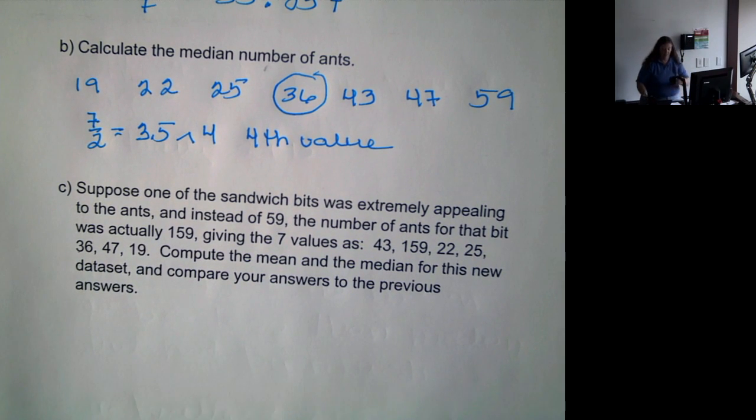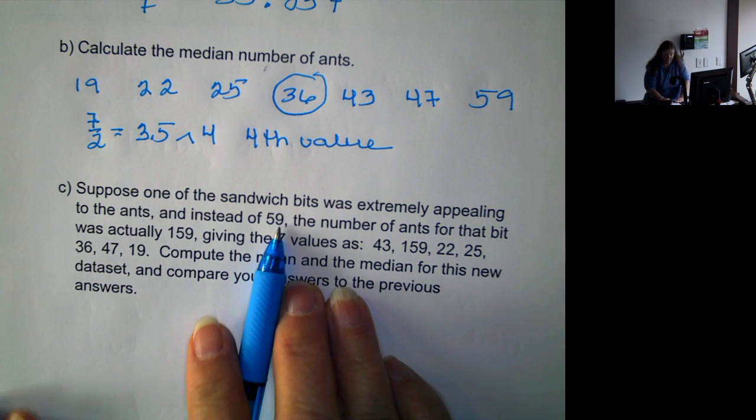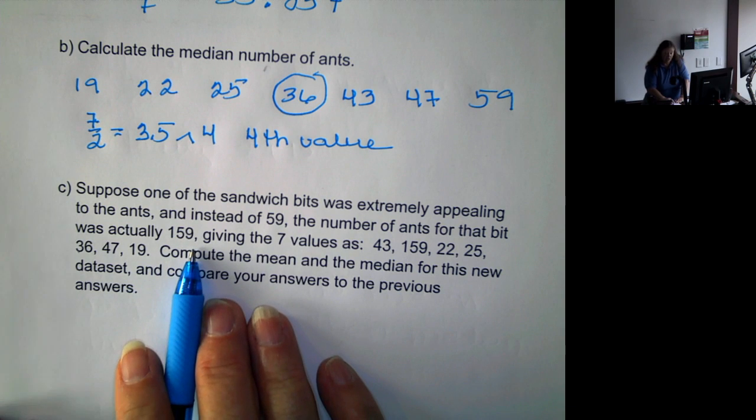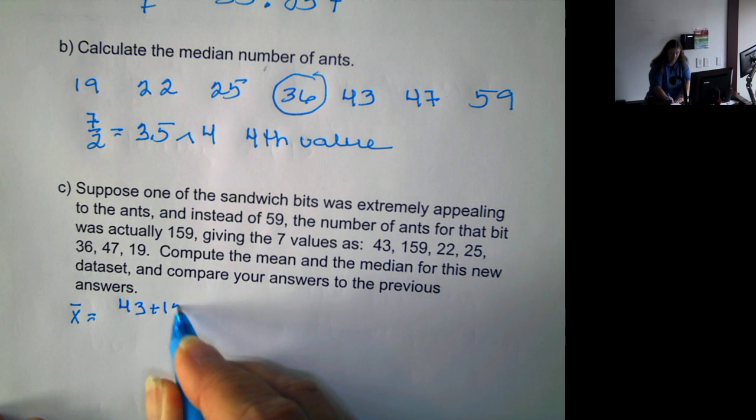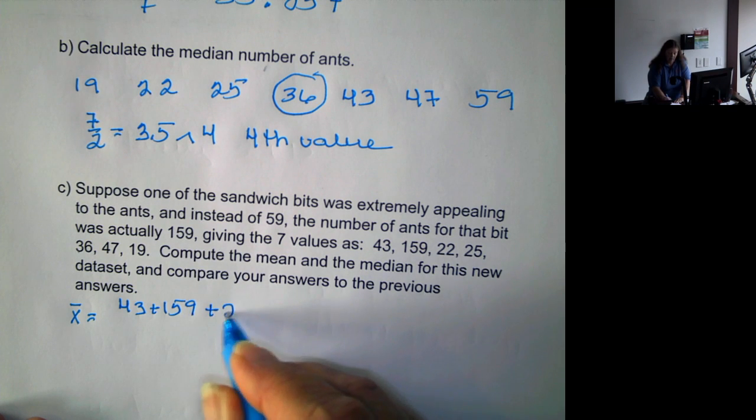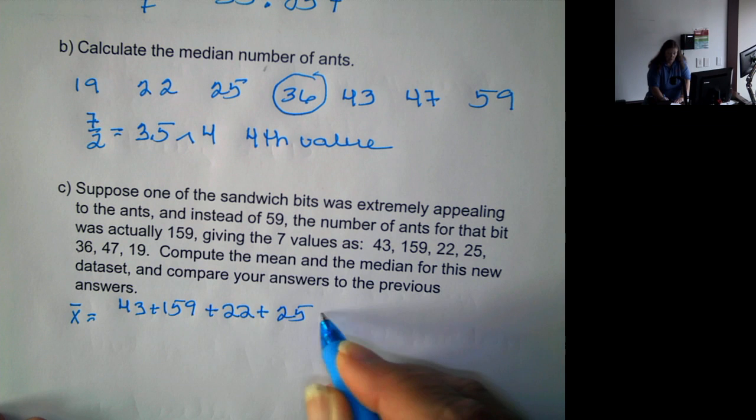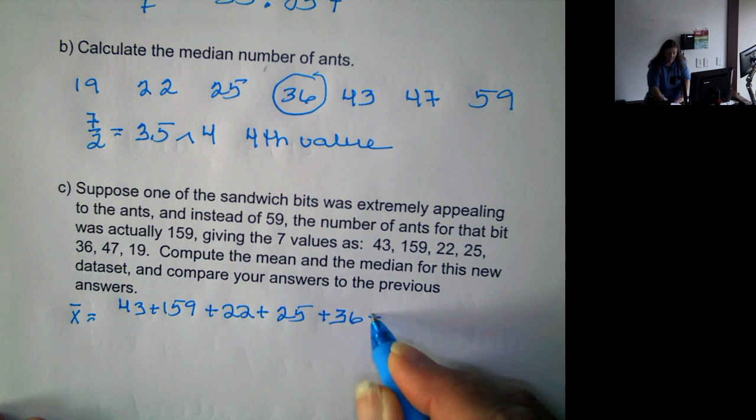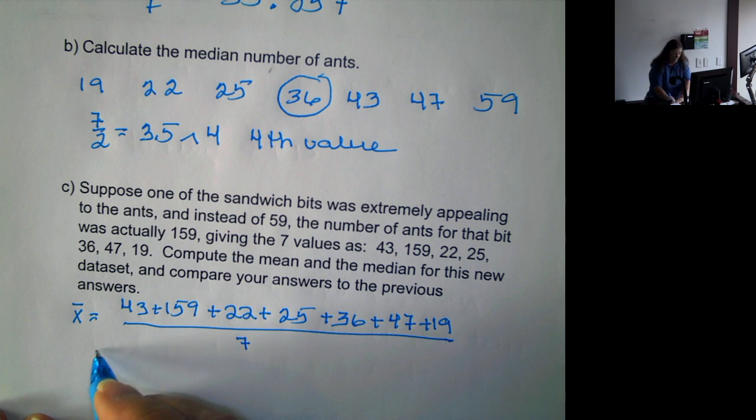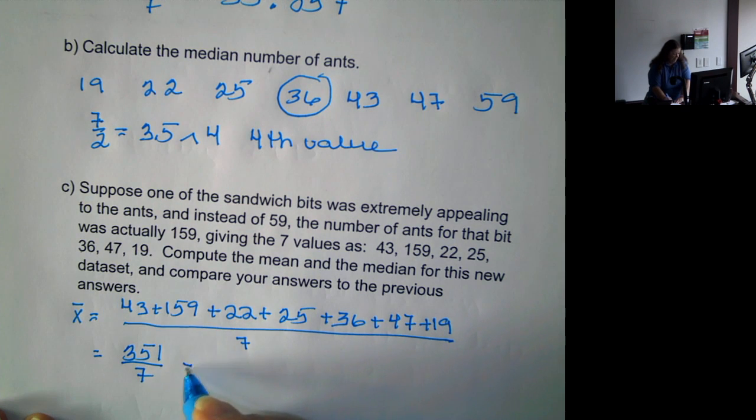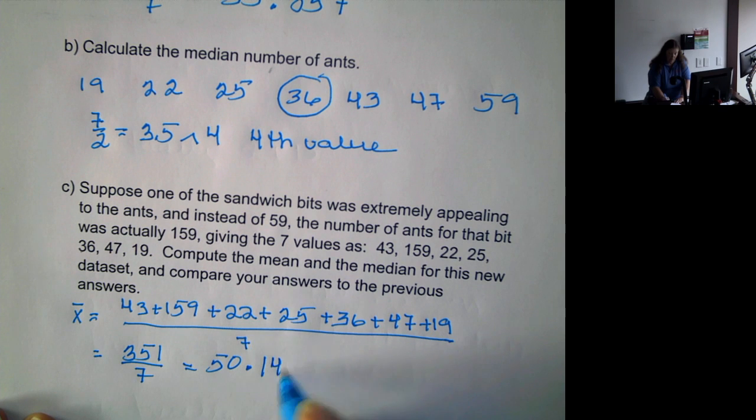Now, we're going to see what happens if we add another number. Say we had counted incorrectly or we wrote the number down incorrectly. Let's see what happens now. Instead of 59, it was actually 159. So now to get the mean, we have 43 plus 159 plus 22 plus 25 plus 36 plus 47 plus 19 divided by 7, that gives us 351 divided by 7, or a mean of 50.143.